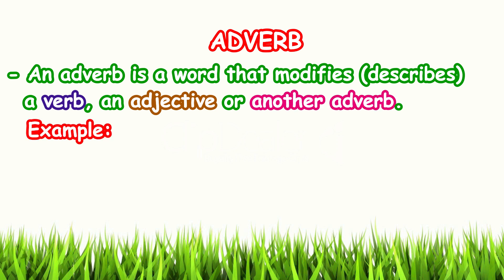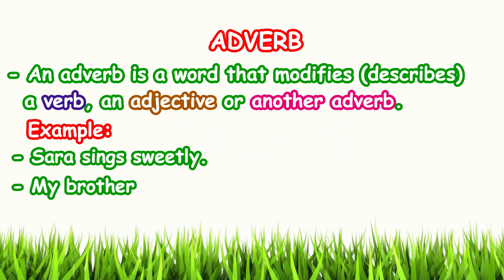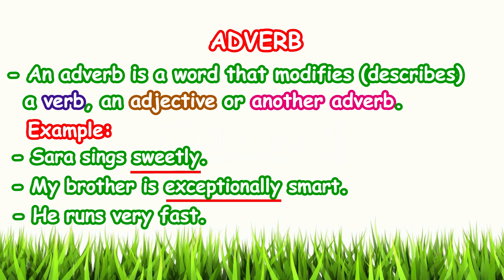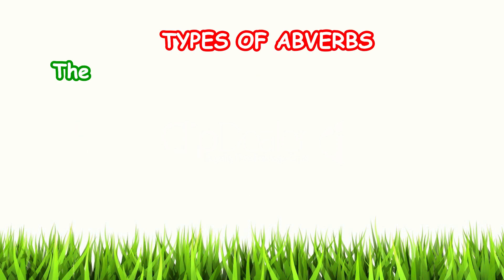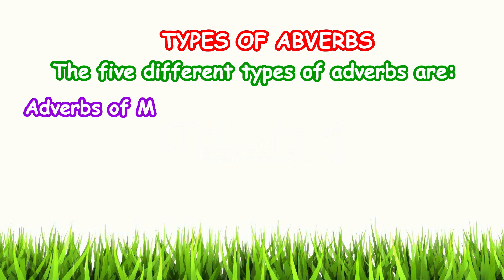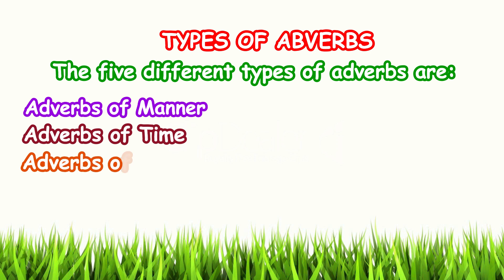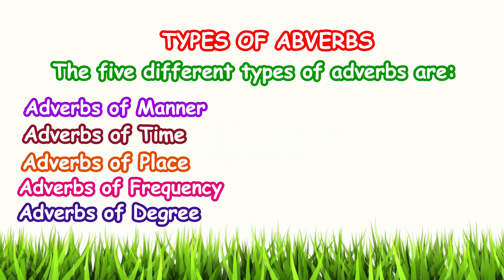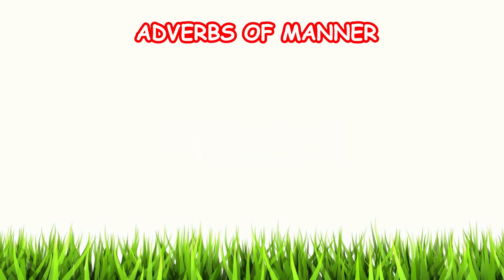or another adverb. For example: 'Sarah sings sweetly,' or 'My brother is exceptionally smart,' or 'He runs very fast.' The words sweetly, exceptionally, and very are the adverbs. The five different types of adverbs are: adverbs of manner, adverbs of time, adverbs of place, adverbs of frequency, and adverbs of degree.